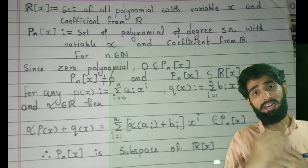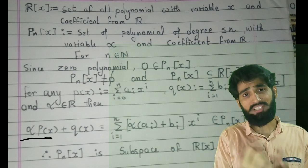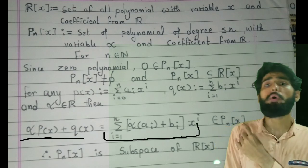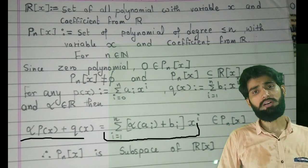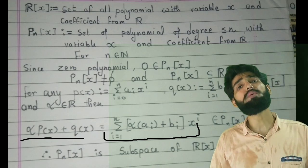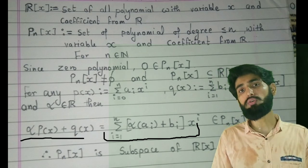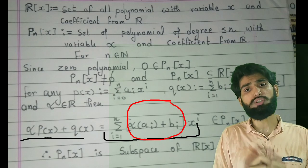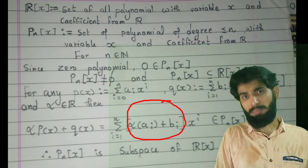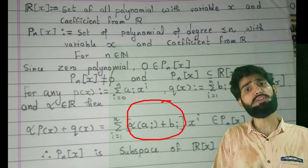Because as we see, while adding alpha p(x) plus q(x), the polynomial that you are finding over here is coming out to be a polynomial of degree n. It might be possible the coefficient of x^n becomes 0, it is fine.